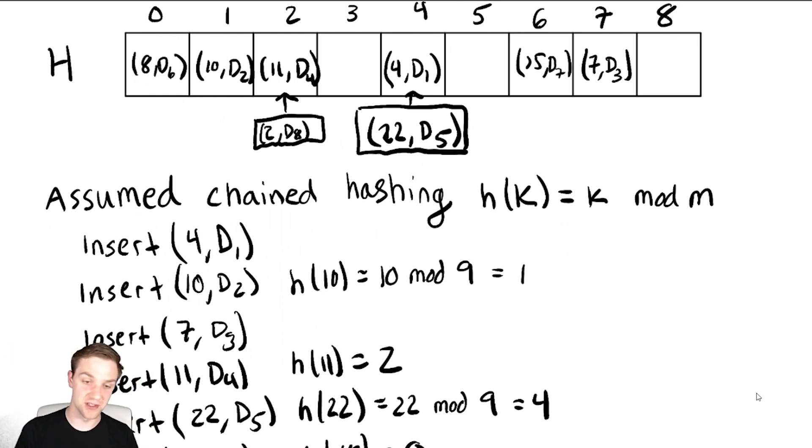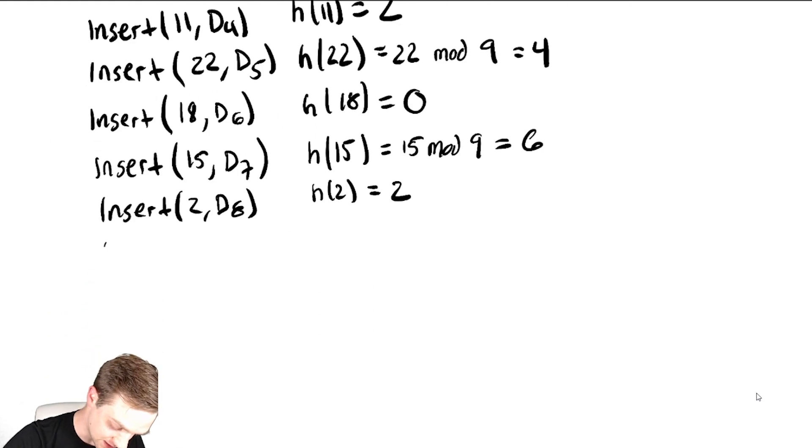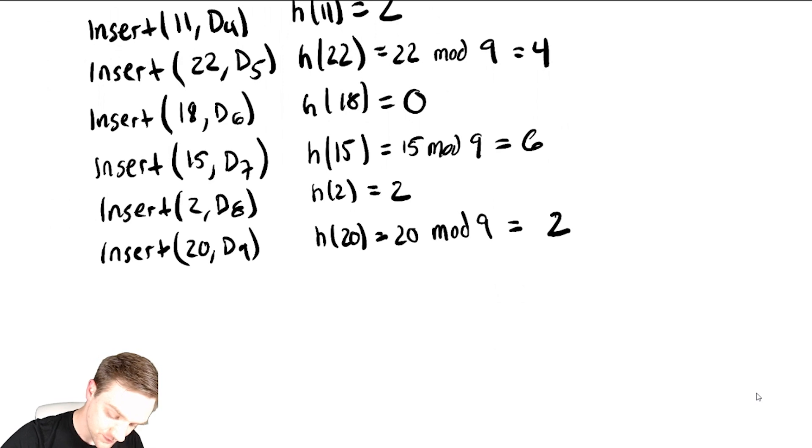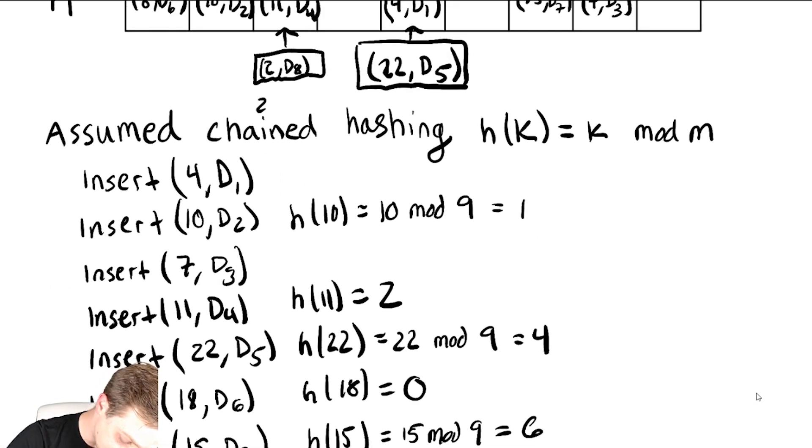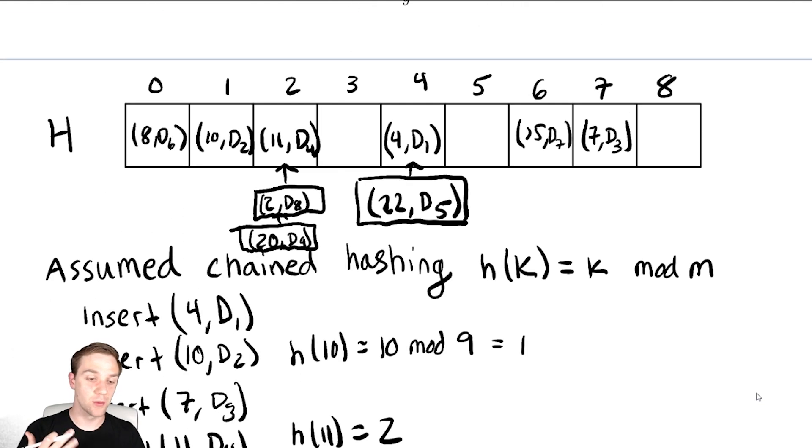And you can repeat this process as you do more and more insertions. If I was to get another collision at location 2, for example if I did an insert of 20, d9, that's h of 20 is 20 mod 9, which is 2. If I got another collision, I would need to put 20, d9 down here below that. And you can keep appending to these lists. So the idea with chained hashing is that whenever we get a collision, we're going to resolve that collision by adding on to a linked list at that location.